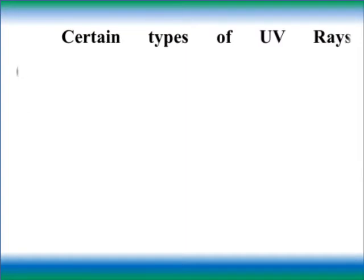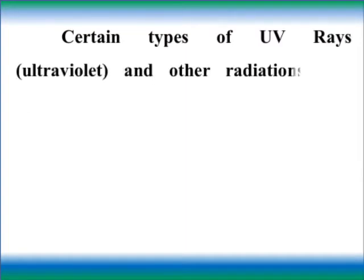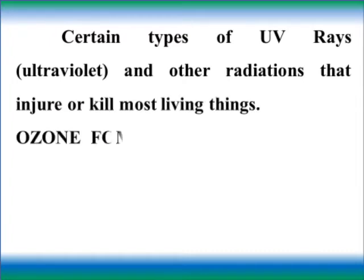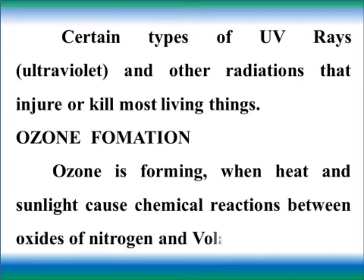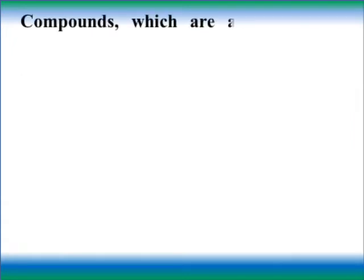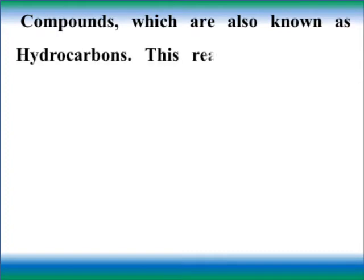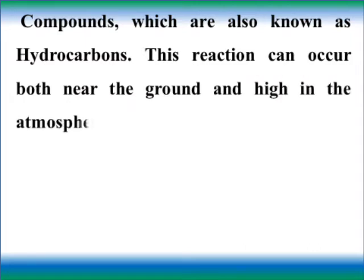Certain types of UV rays and other radiations injure or kill most living things. Ozone formation: Ozone is formed when heat and sunlight cause chemical reactions between oxides of nitrogen and volatile organic compounds, also known as hydrocarbons. This reaction can occur both near the ground and high in the atmosphere.